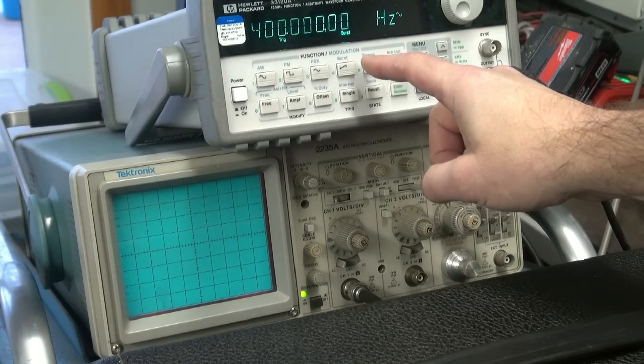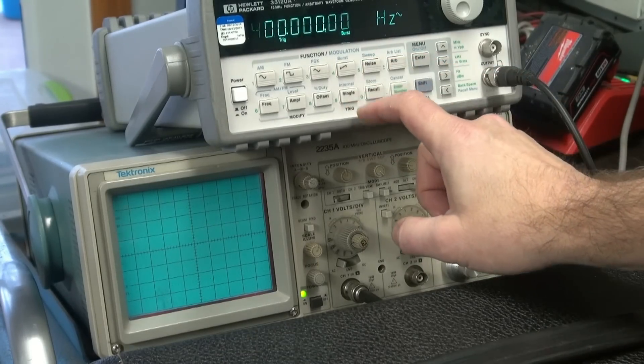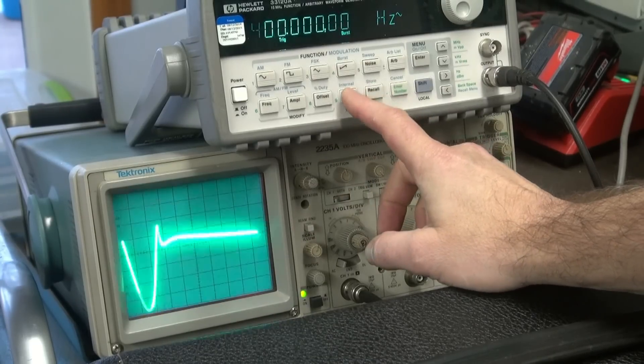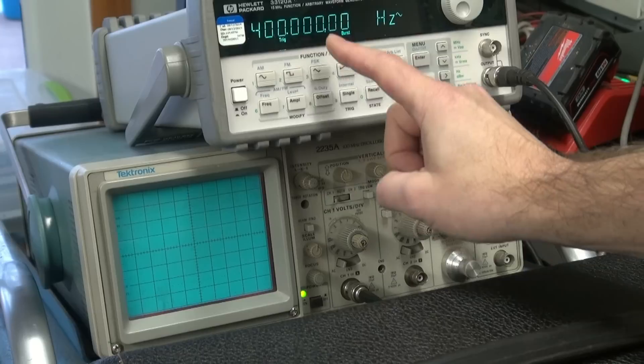I've got the setup in burst mode and I can trigger it with this button. So you see that? So that's the output of the amp. And I'm hitting it with a 400 Hz tone.